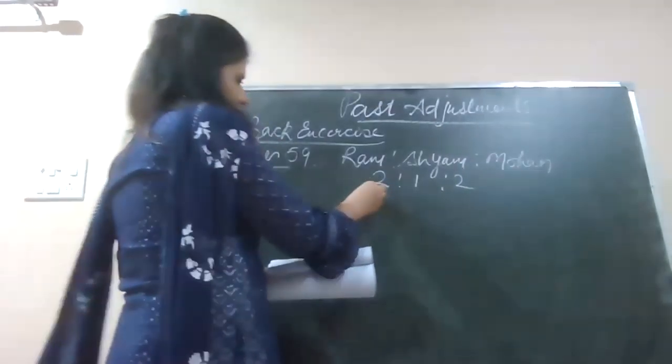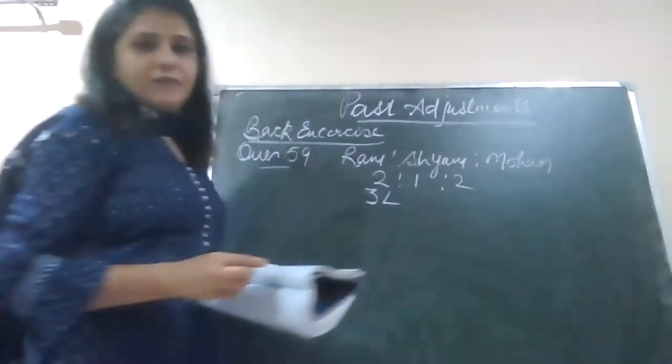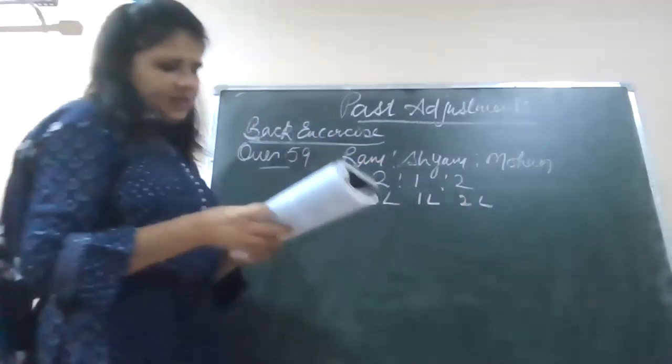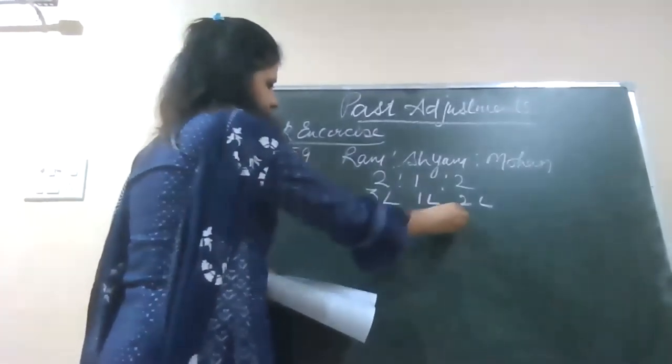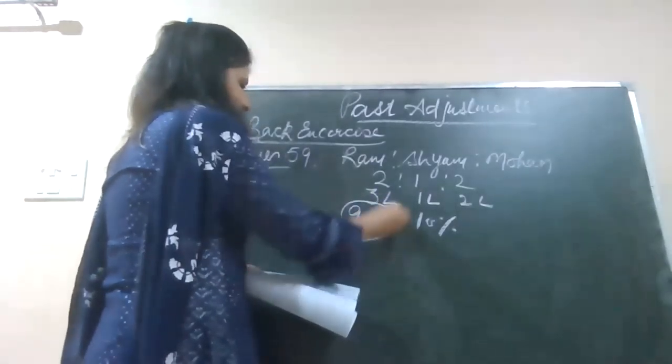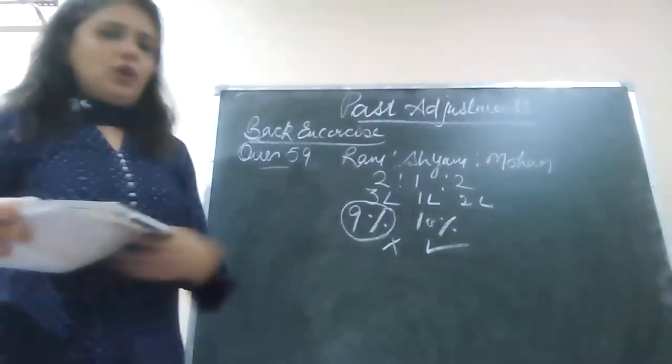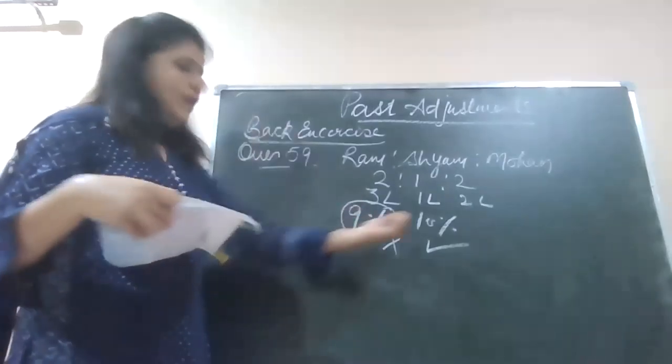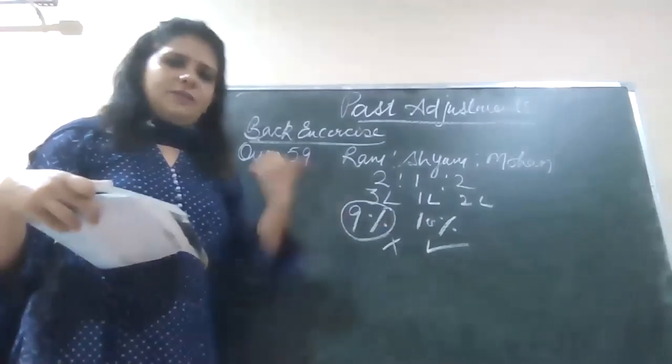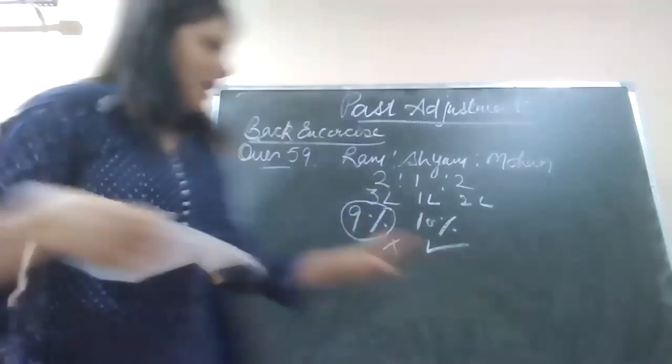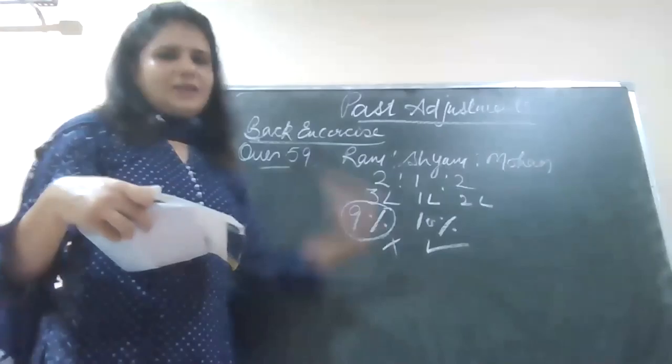Their capitals are fixed. Since capitals are fixed, capitals he is giving: 3 lakh, 1 lakh, and 2 lakh. For the year ended 31st March 2021, interest on capital was credited to them. We gave 9% interest, but 9% was given which was wrong. 10% was to be given to them. So 1% more interest needs to be provided.